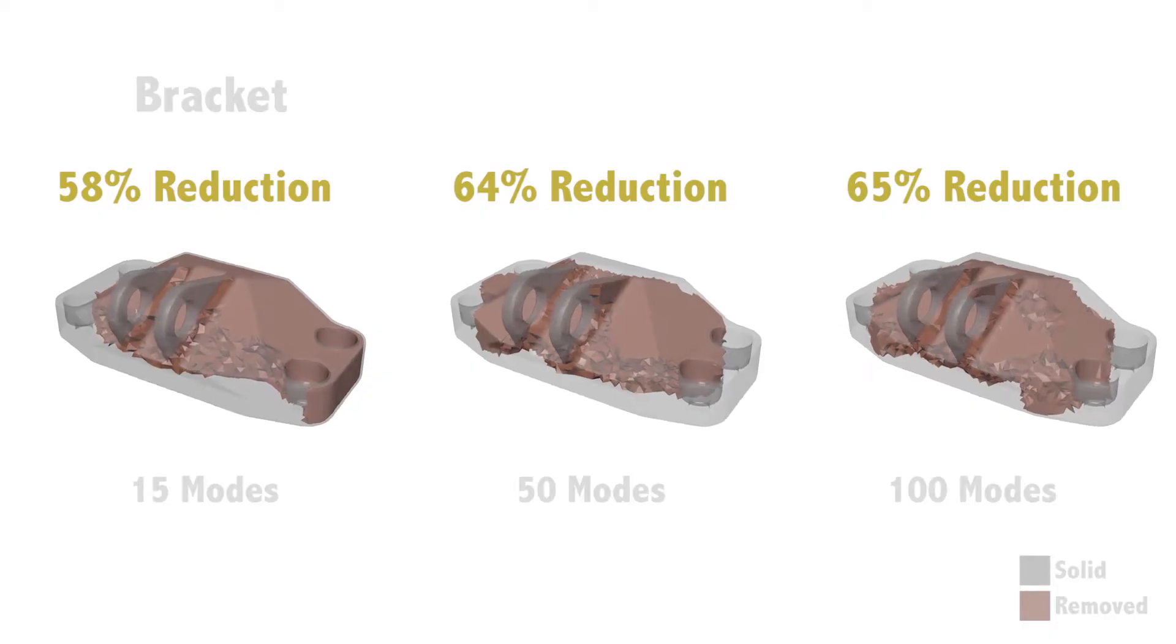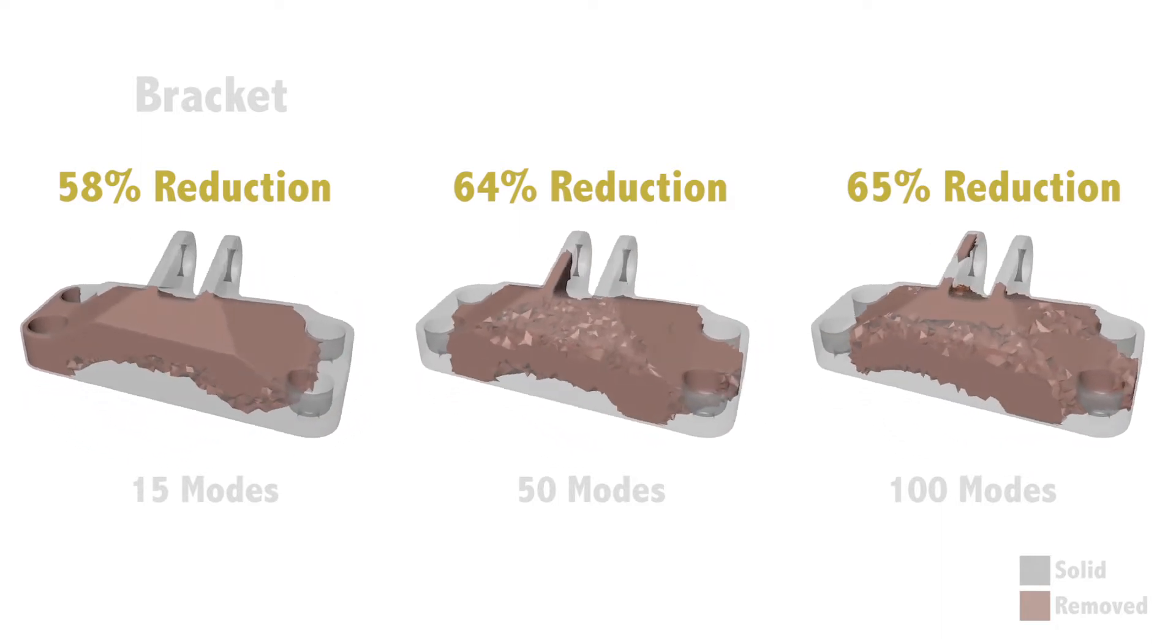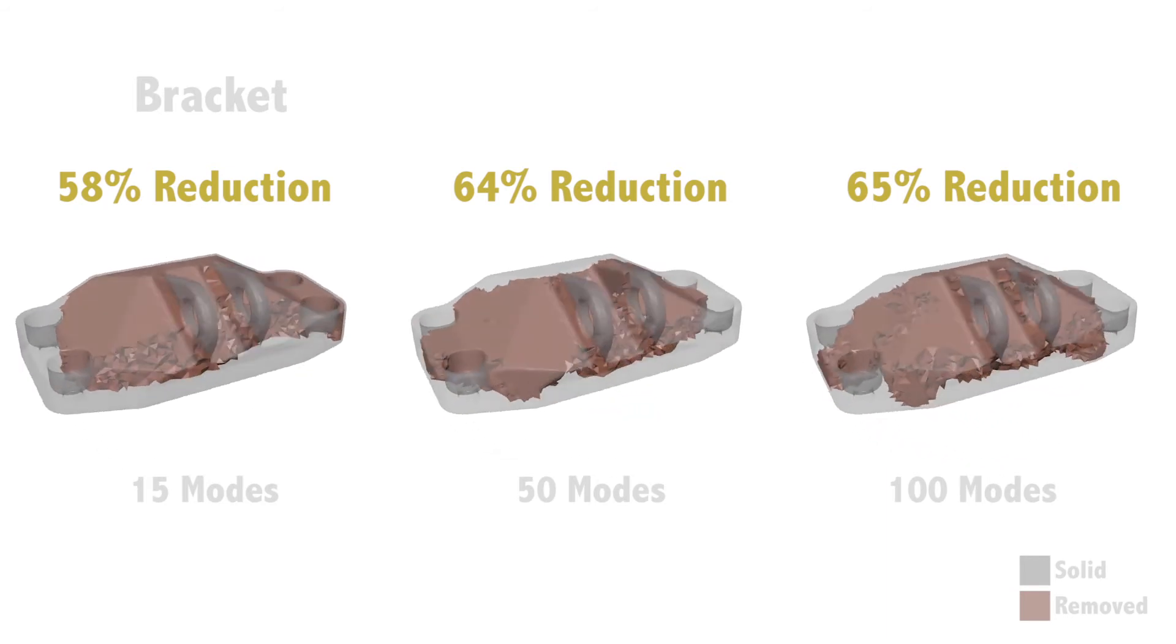This bracket model is optimized using three different numbers of material modes. As the number of modes increases, more mass is removed.